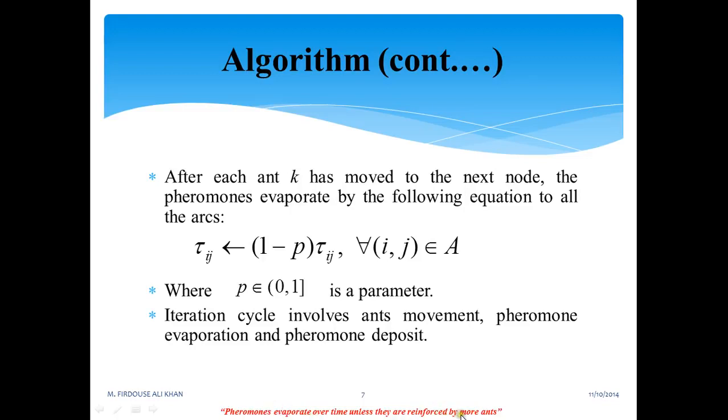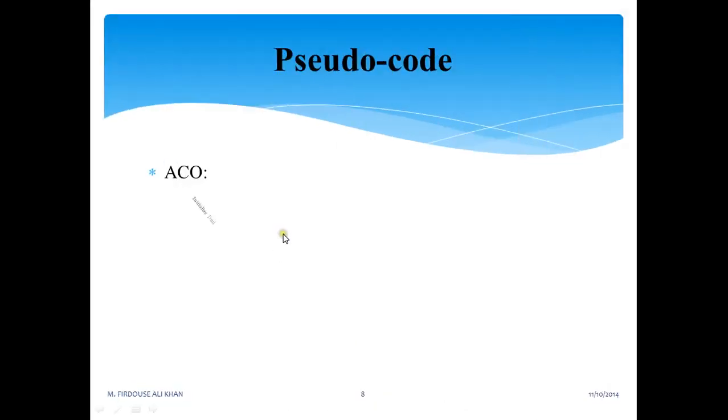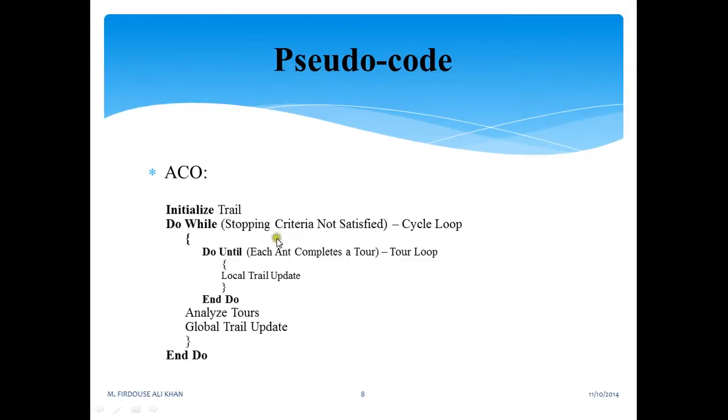A small pseudo code: initialize trail, do while stopping criteria not satisfied (a terminating condition), and do until each ant completes a tour (again a terminating condition). Local trail updates, pheromone trail updates is what we are expecting here, and do analyze tools, global trial updates. It's just a pseudo code which represents the behavior.